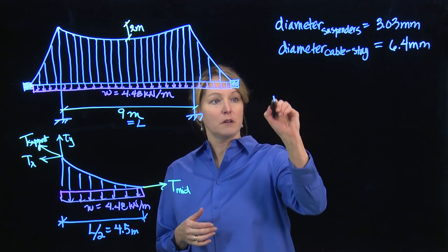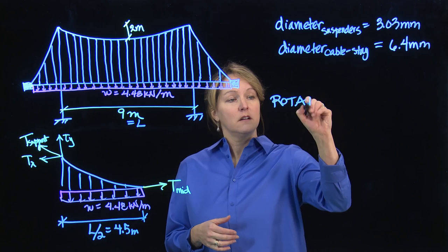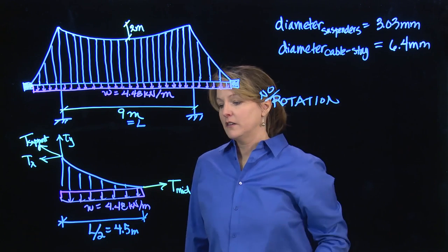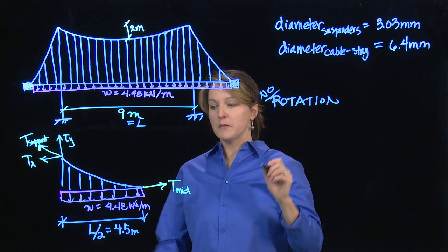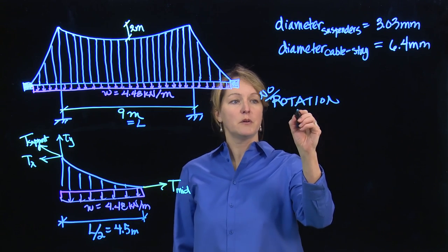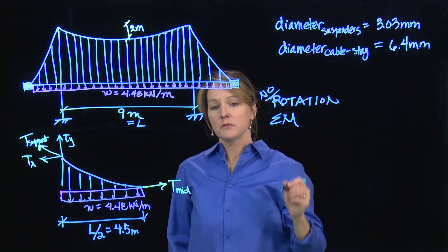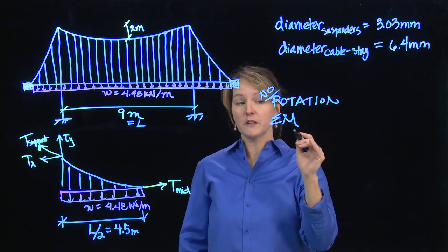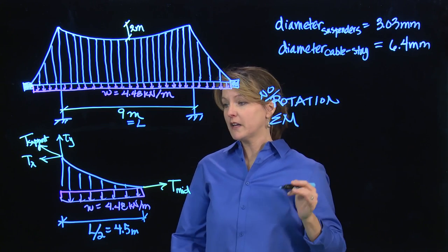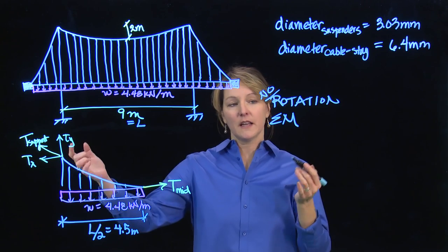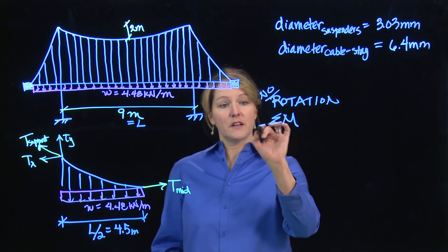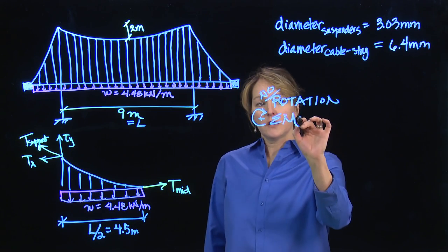So I'm going to start with rotation. And I want no rotation if I want to make this work. I'm going to use the support as my rotation point. So I will do something called summing the moments. We'll talk about moments more when we look at arches and even more when we look at beams. Again, it's a fancy way of saying I don't want any rotation. So I'll assume clockwise positive.